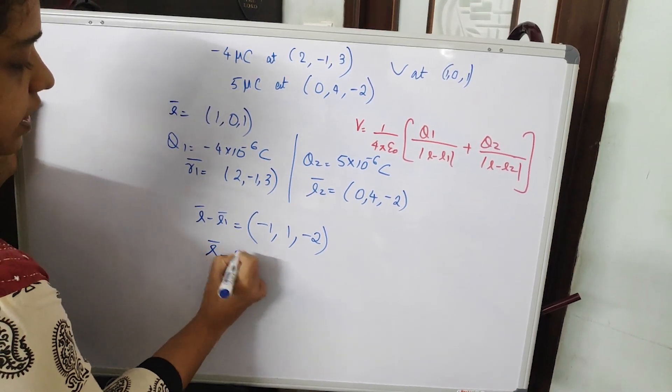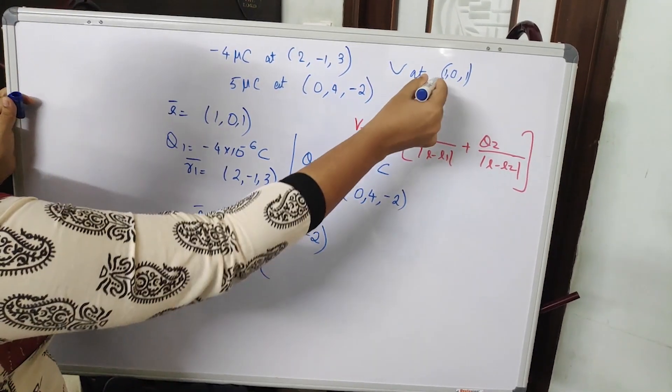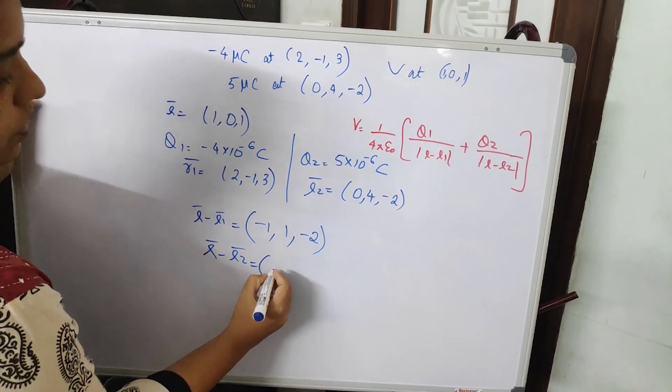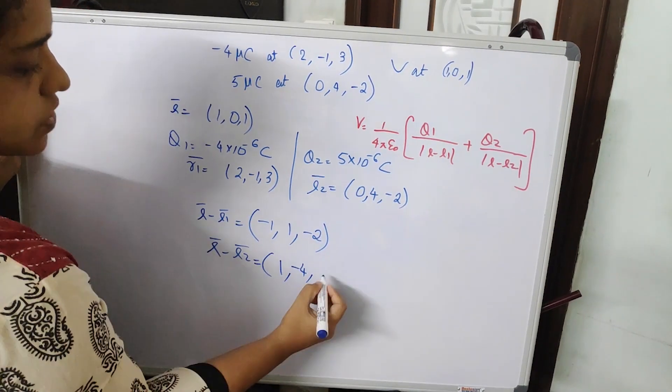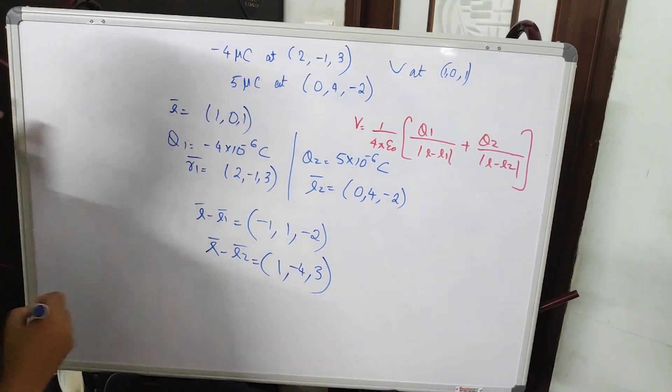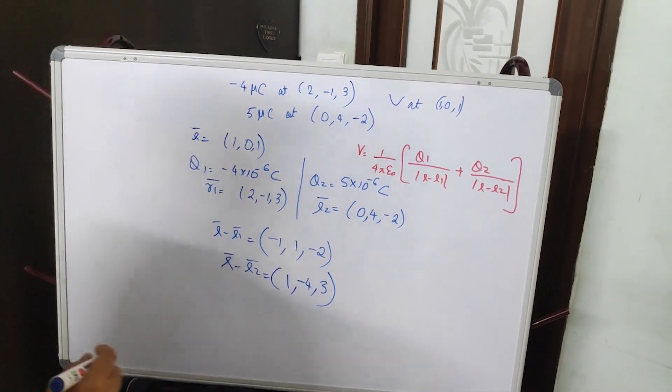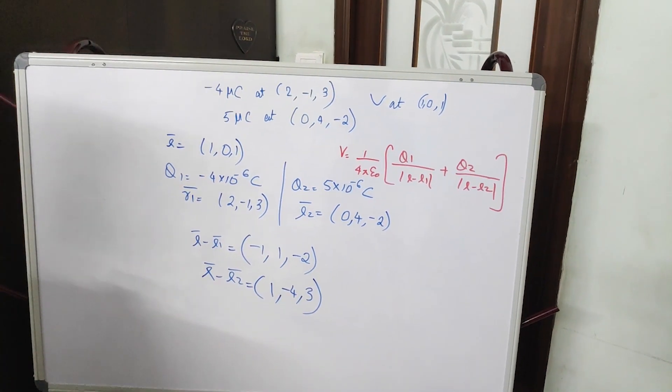Similarly, vector r minus vector r2 is equal to again 1, 0, 1 minus: 1 minus 0 is 1, 0 minus 4 is minus 4, and 1 minus minus 2 that is 3. You can directly substitute in this equation and you will get electric potential.